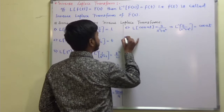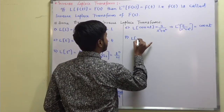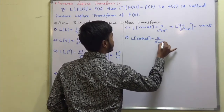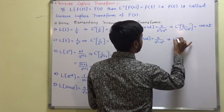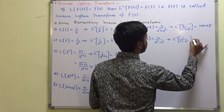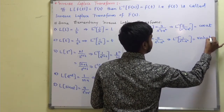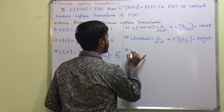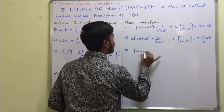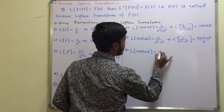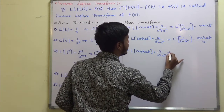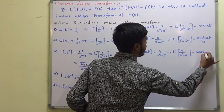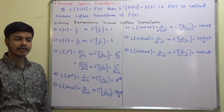The Laplace transform of sinh(at) is a/(s²−a²), which implies L inverse of 1/(s²−a²) is sinh(at)/a. The Laplace transform of cosh(at) is s/(s²−a²), so L inverse of s/(s²−a²) is cosh(at).